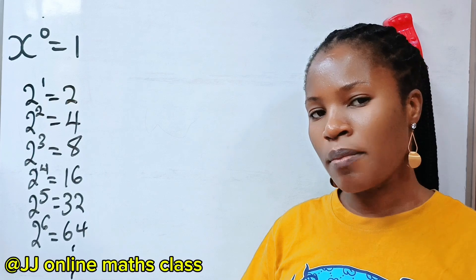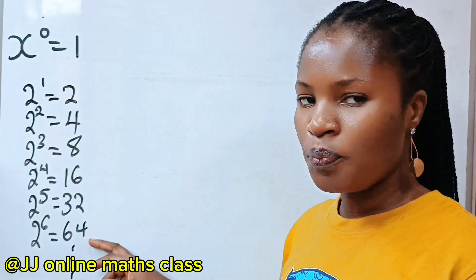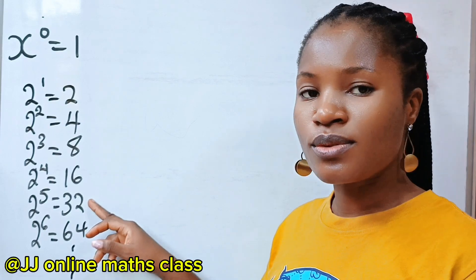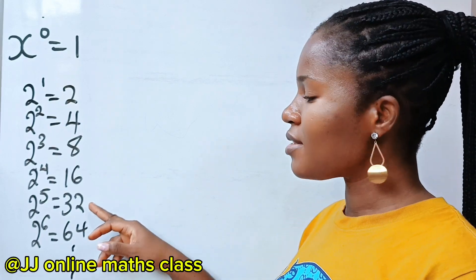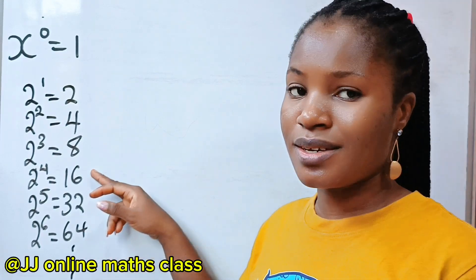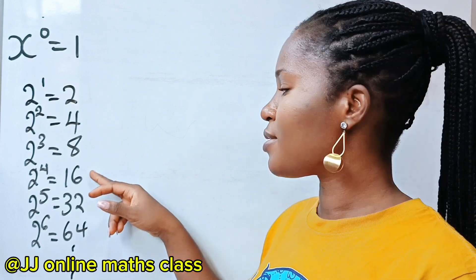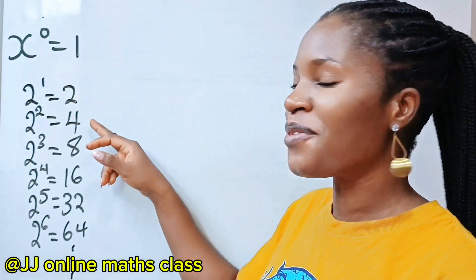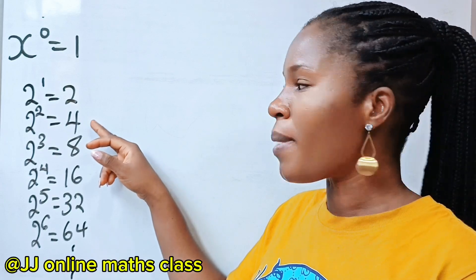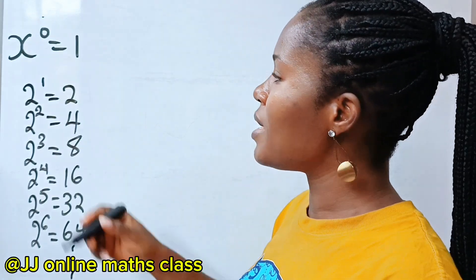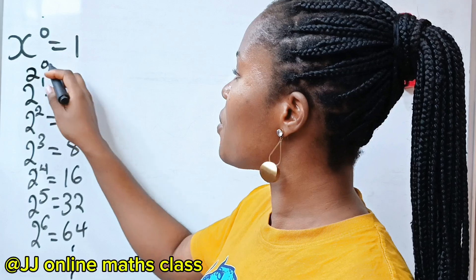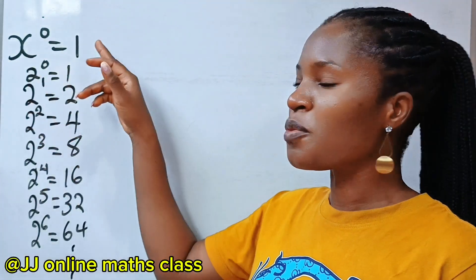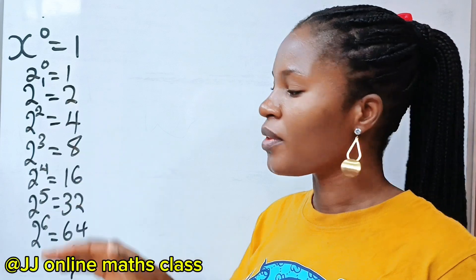Have you noticed a pattern? Because these are powers of 2, if we divide 64 by 2 we get 32. If we divide 32 by 2 we get 16. If we divide 16 by 2 we get 8. If we divide 8 by 2 we get 4. If we divide 4 by 2 we get 2. So that means if we have 2 to the power of 0 here, if we divide 2 by 2 we get 1. So you can see that 2 to the power of 0 is equal to 1.